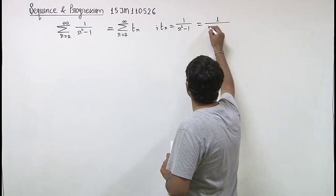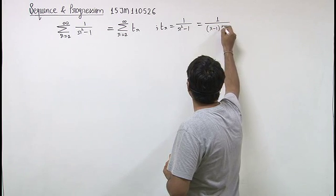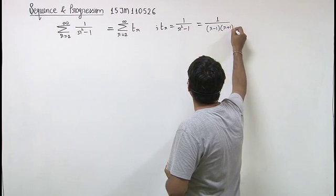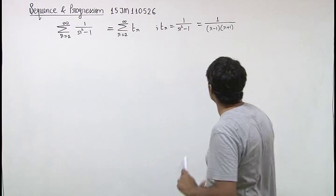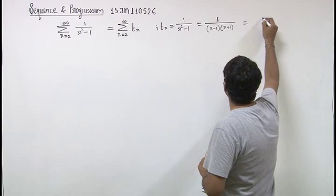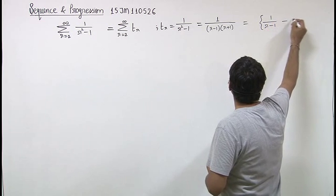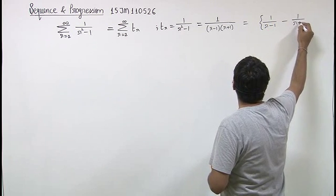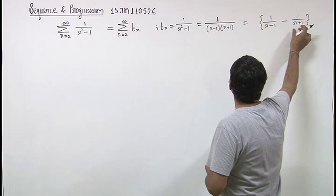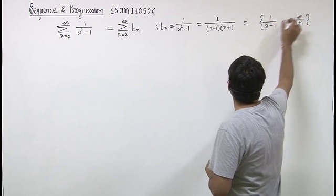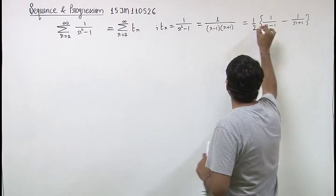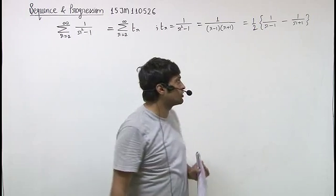It can be written as 1 upon r minus 1 into r plus 1. So we can write it as 1 upon r minus 1 minus 1 upon r plus 1. We can observe that the numerator will be r plus 1 minus r minus 1, which is 2. So put 1 by 2 before this bracket.